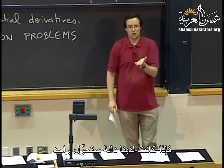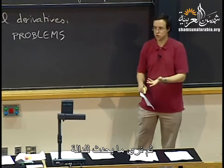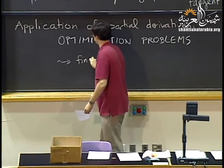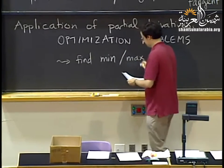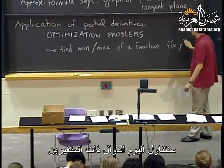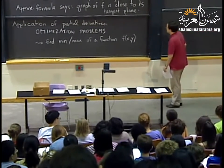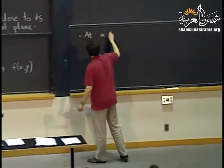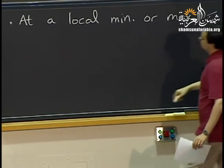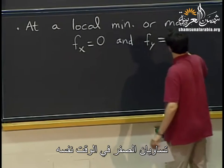This is an application of partial derivatives to optimization problems. Maybe ten years from now your job might be to minimize the cost of something or maximize the profit of something. Typically the function you will have to minimize or maximize will depend on several variables. If you have a function of one variable, you find its minimum or maximum by setting the derivative equal to zero. Here it's similar, except we have several derivatives.